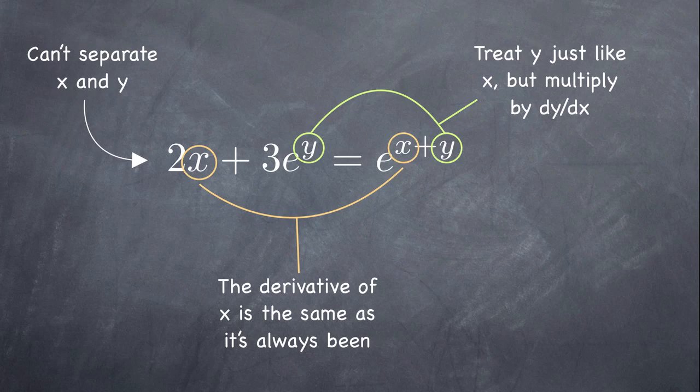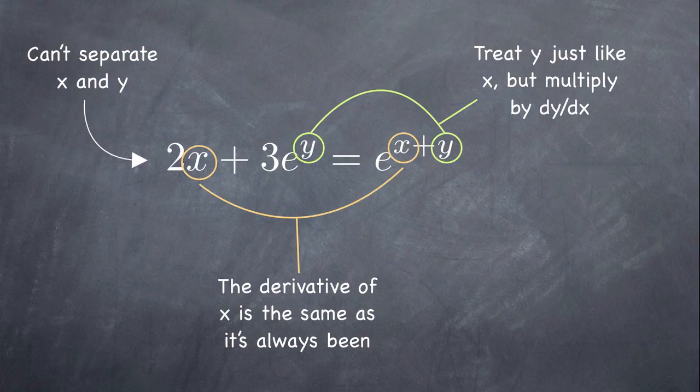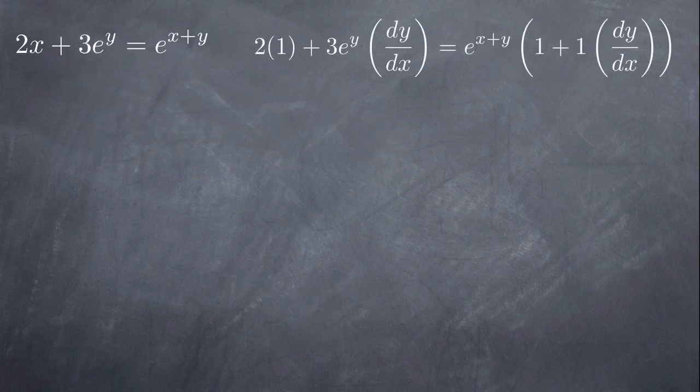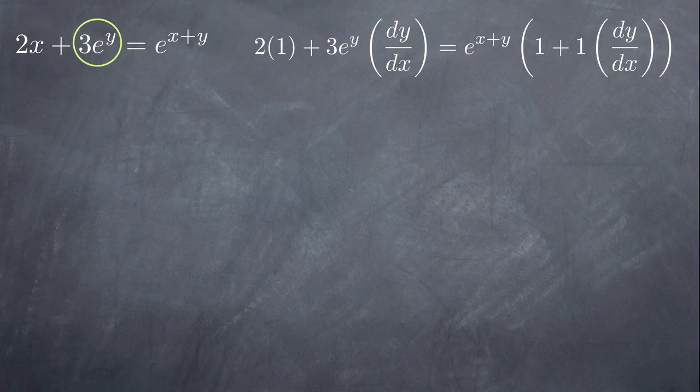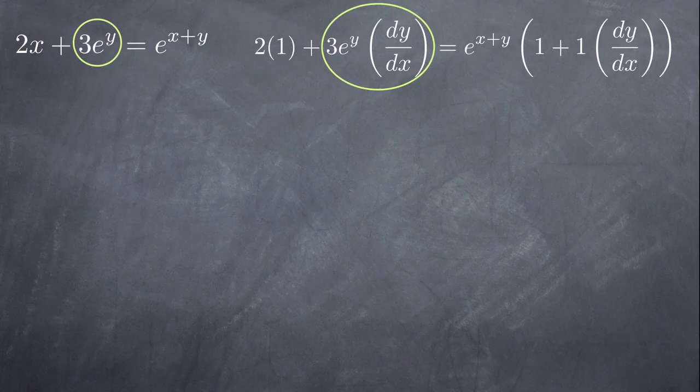We'll see in a second how this becomes super important when we start working with related rates problems. But let's take a look at the application of implicit differentiation on this equation. As I mentioned, we'll take the derivative of x in the same way we always have. So when we run across 2x here, we know by the power rule that the derivative is 2. In the second term, we come to a y. If this were an x, the derivative of 3e to the x would be 3e to the x. Since it's a y, the derivative is taken the same way and it's 3e to the y. But because it's a y, we have to multiply by dy over dx.